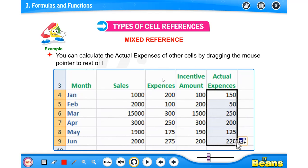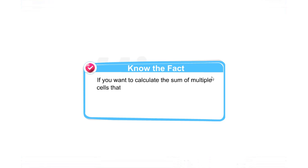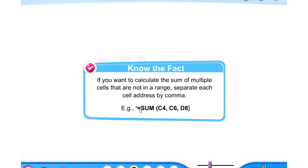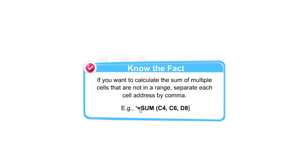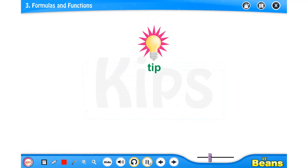We will cover cell references to another worksheet tomorrow as time is almost over. To calculate the sum of multiple cells that are not in a range, separate each cell address by a comma. For example: =SUM(C4,C6,D8). This function is mainly used for cells not in a continuous series — one cell is C4, one is C6, one is D8, at different locations — so you write their cell names separated by commas instead of using a range.